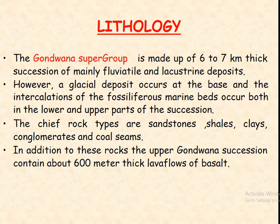The Gondwana Supergroup is made up of a 6–7 km thick succession of mainly fluvial and lacustrine deposits. However, a glacial deposit occurs at the base, and intercalations of fossiliferous marine beds occur both in the lower and upper part of the succession. The chief rock types are sandstone, shale, clays, conglomerate, and coal seams. The Upper Gondwana succession also contains about 600 m thick lava flows of basalt.